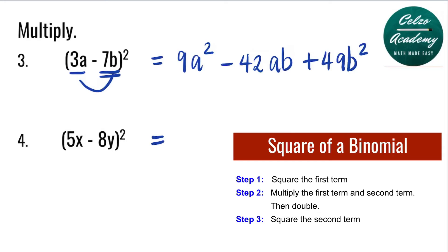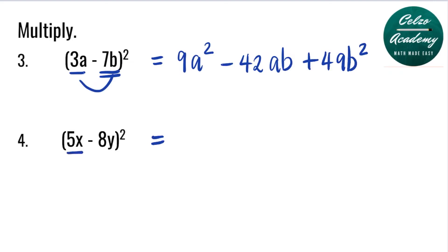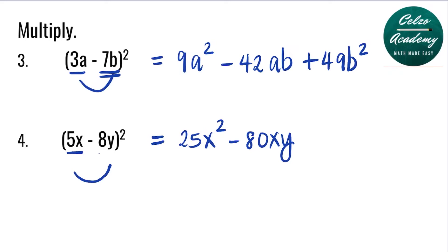Question 4: 5x minus 8y, to the second power. Step 1: Square the first term — 5x times 5x is 25x squared. Step 2: Multiply the first and second, and then double. 5x times negative 8y is negative 40xy; doubling it gives negative 80xy. Step 3: Square the second term — negative 8y times negative 8y is positive 64y squared. So the answer for question 4 is 25x squared minus 80xy plus 64y squared.